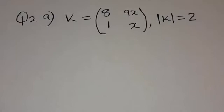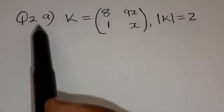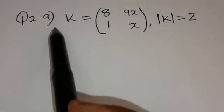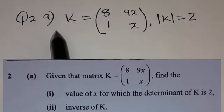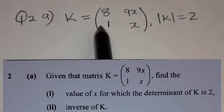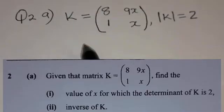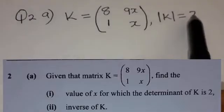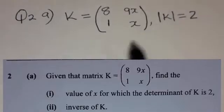In this video, we're going to look at the 2023 grade 12 internal mathematics paper 2, question 2. Question 2a says: given that the matrix K is this one here, find the value of X for which the determinant of K is 2.